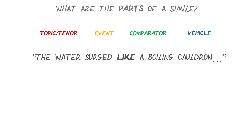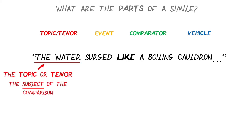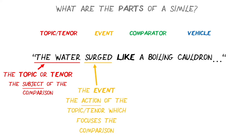So if we have this basic little simile here, which I made up — it's not from Homer — 'The water surged like a boiling cauldron.' First of all, the topic or tenor is the subject of the comparison, the thing you're going to compare to something else to help other people visualize. Then you have the event, the action of the topic or tenor, which focuses that comparison. Here the water is surging, it's bubbling away.